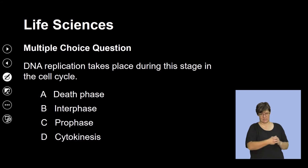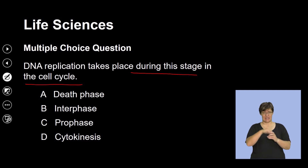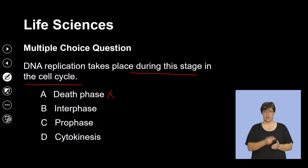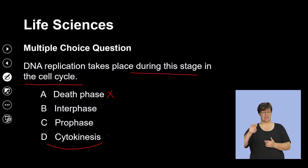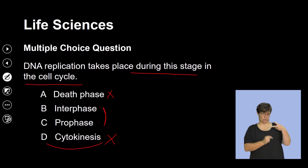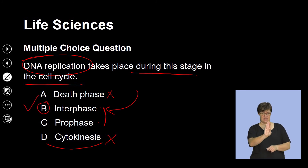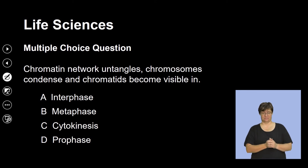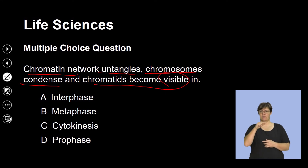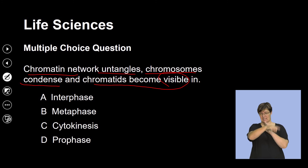Let's apply our understanding to a few questions. Question one: DNA replication takes place during which stage in the cell cycle? The options are: the death phase, interphase, prophase, and cytokinesis. Remember that cytokinesis refers to the division of the cytoplasm, so that's not the phase we need. DNA replication occurs in a phase called interphase, so the correct answer is interphase.